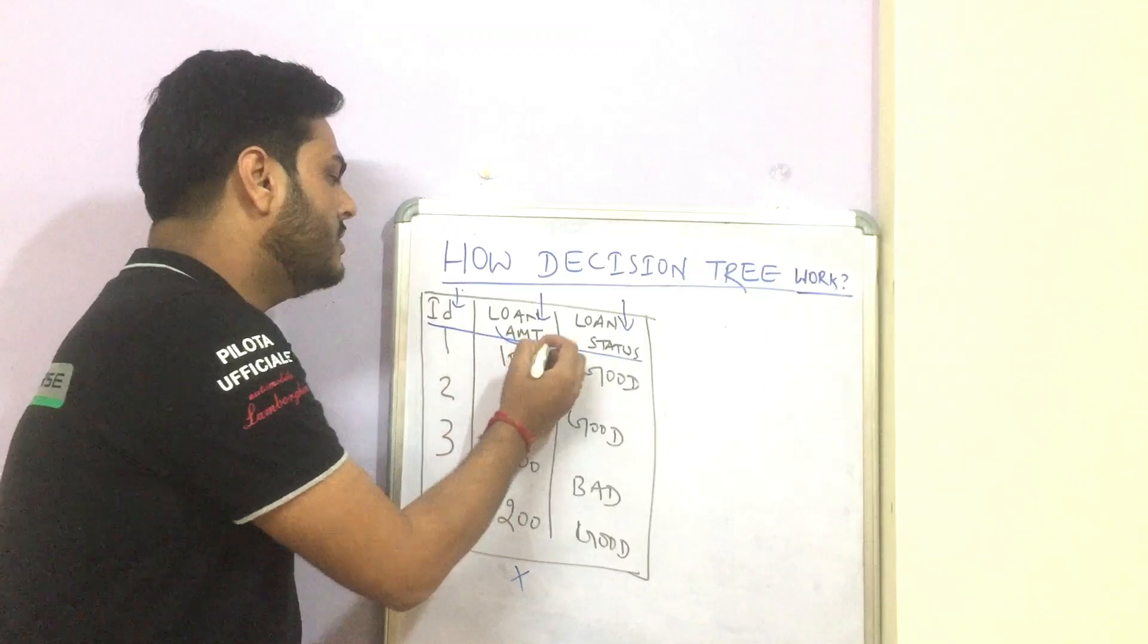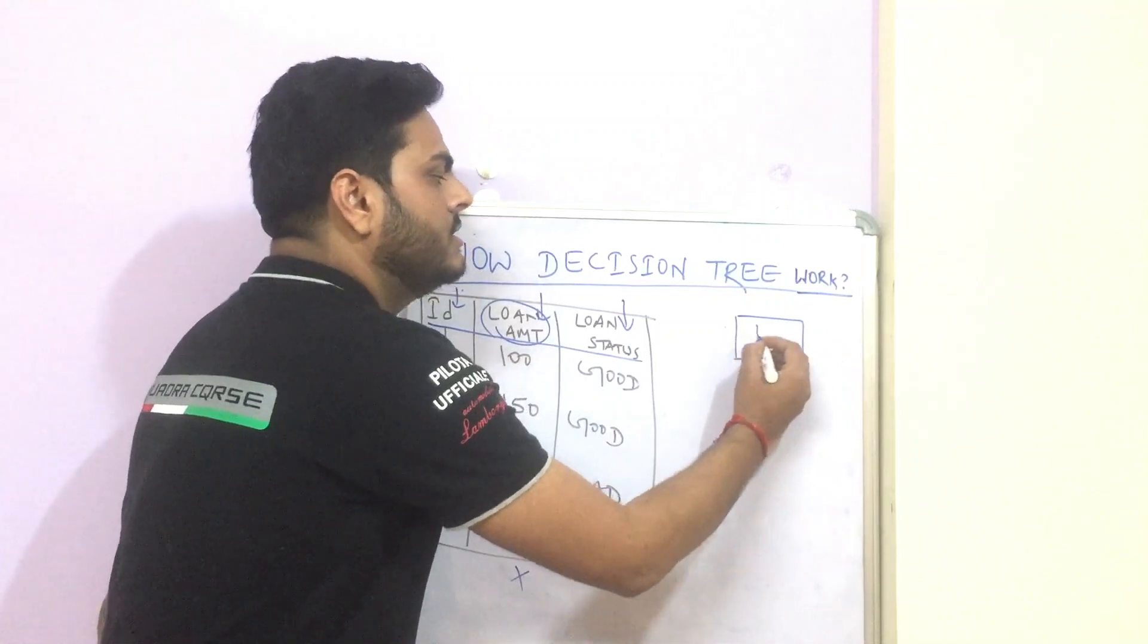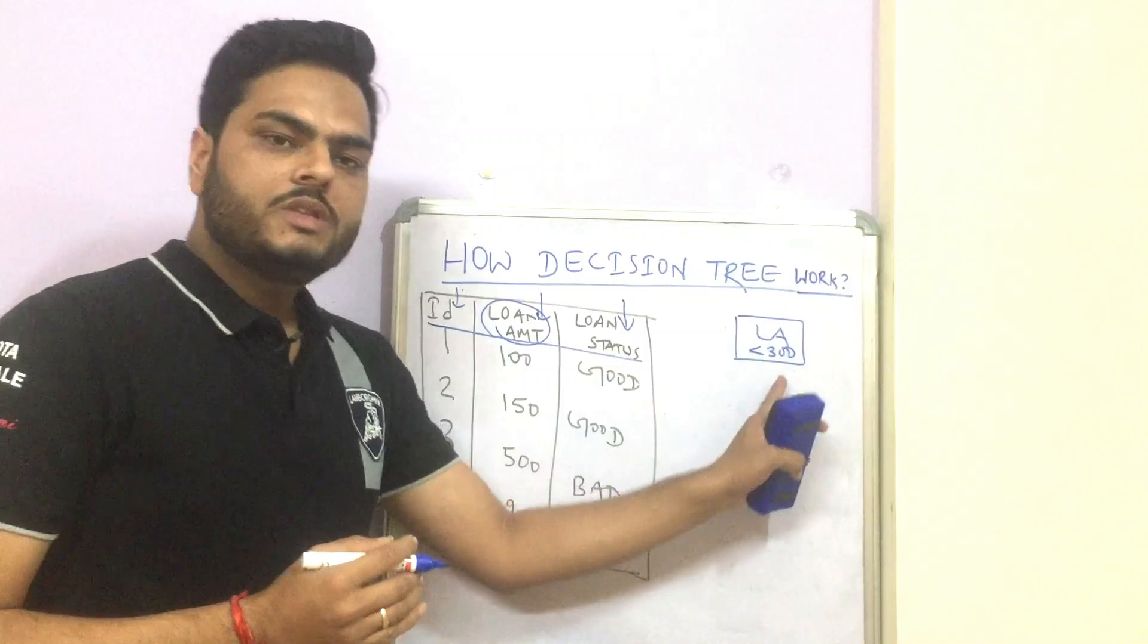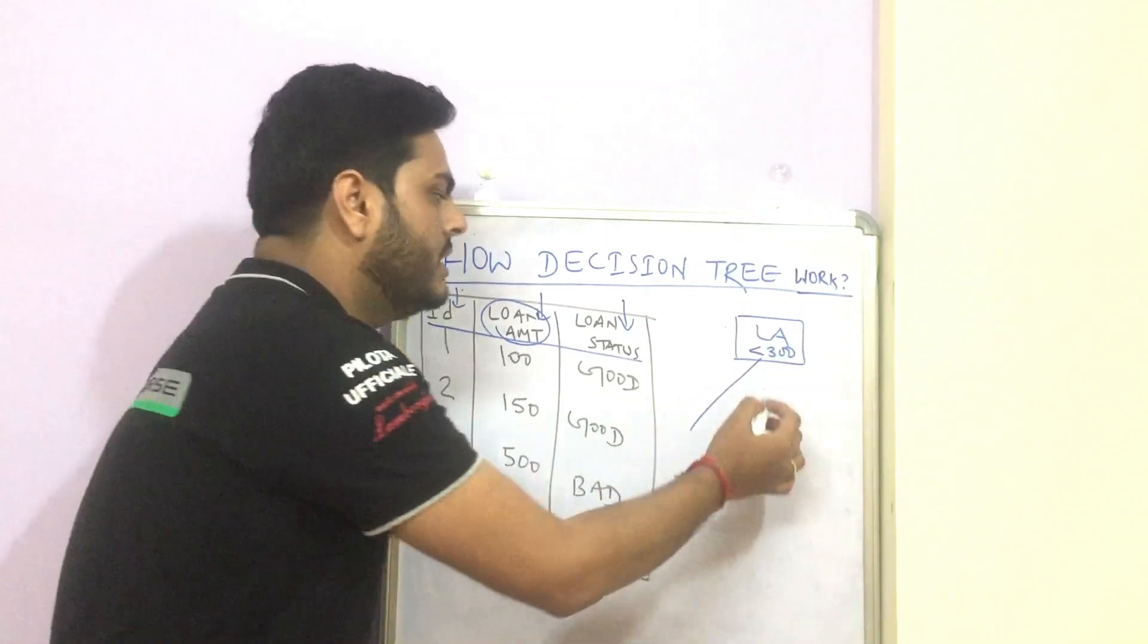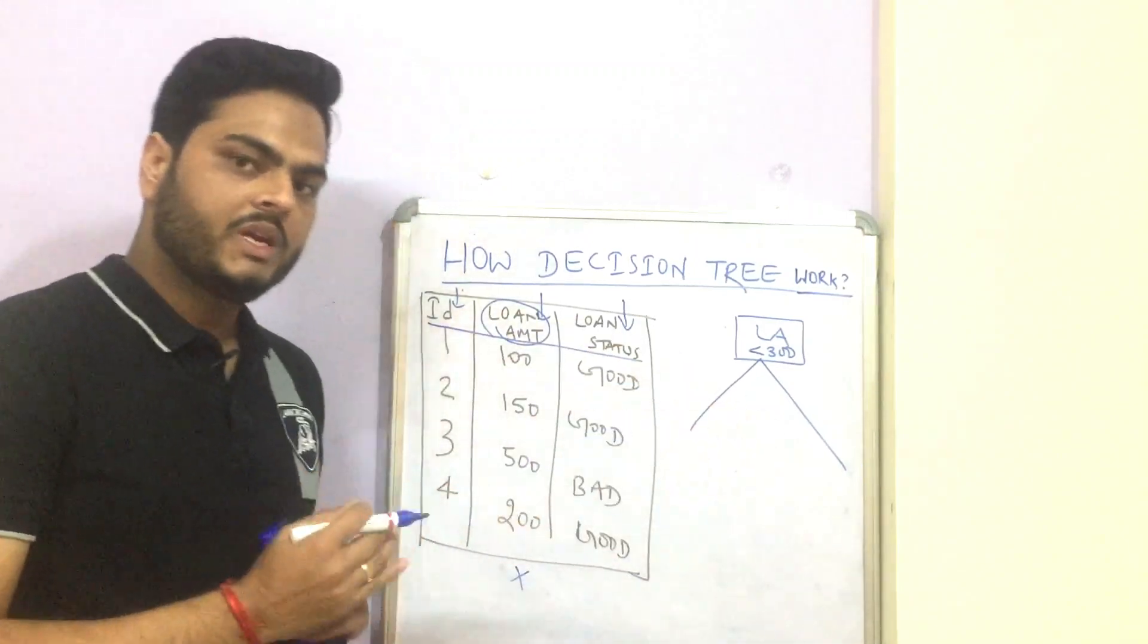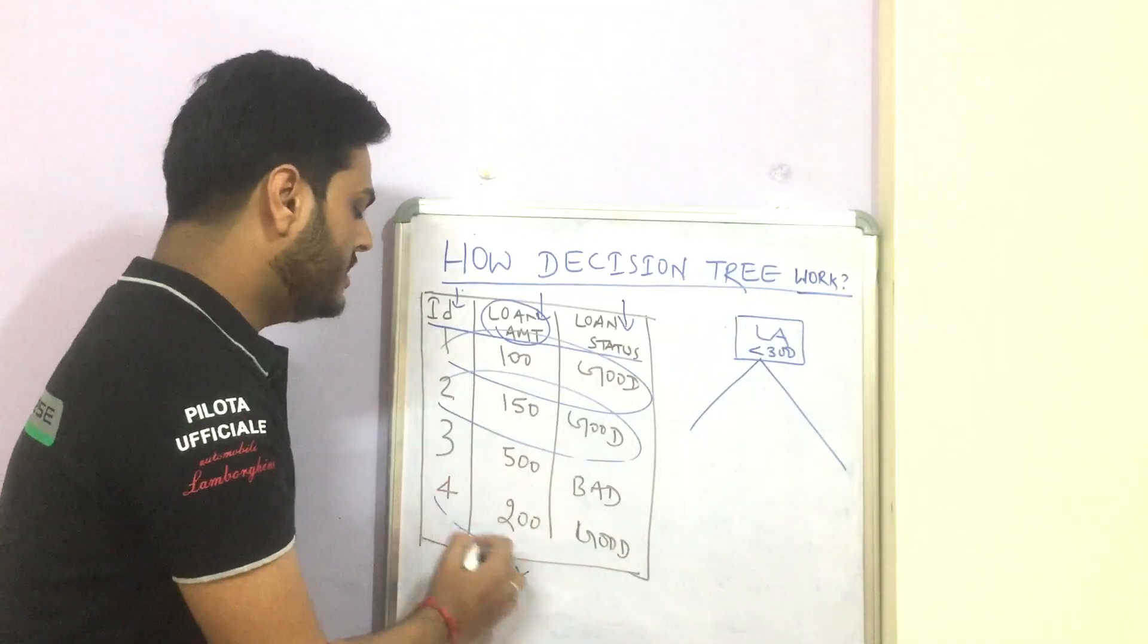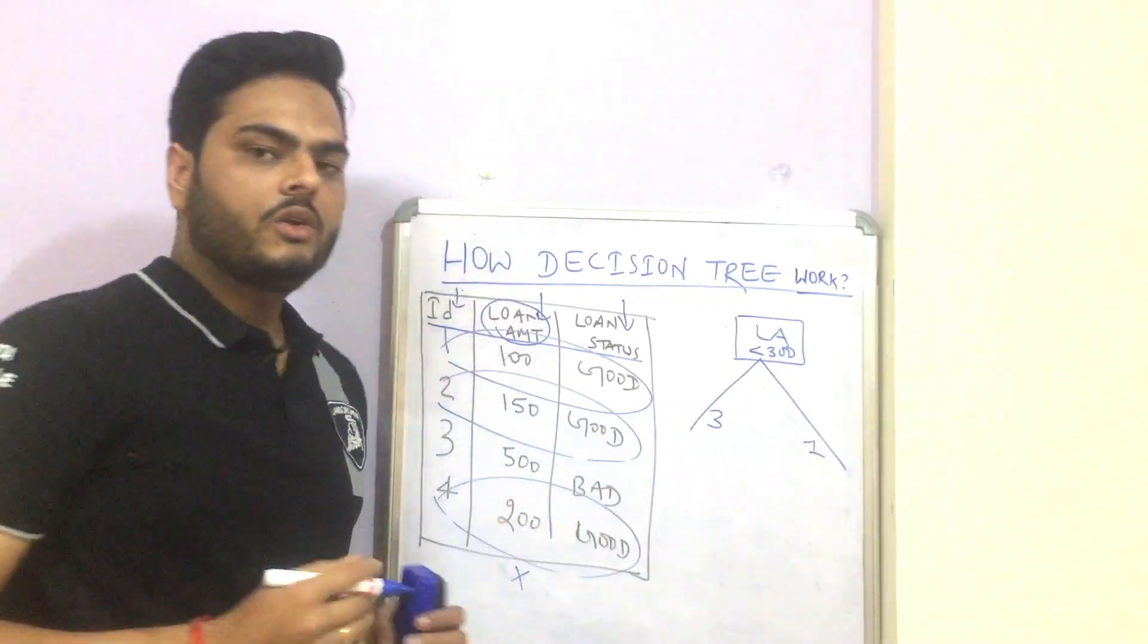So let's say this loan amount column gets selected using those criteria. So a root node will get created like this loan amount. And then one condition. So let's say loan amount greater than or less than 300 is one condition. So loan amount less than 300, all the records will come from this side of the tree, which means one branch and all the records which is where this condition is false goes on other side of the branch. So how many records will come this side of the tree less than 300, this record, this record and this record. So this side of the tree, in this branch, we will have three records and here we will have one record.